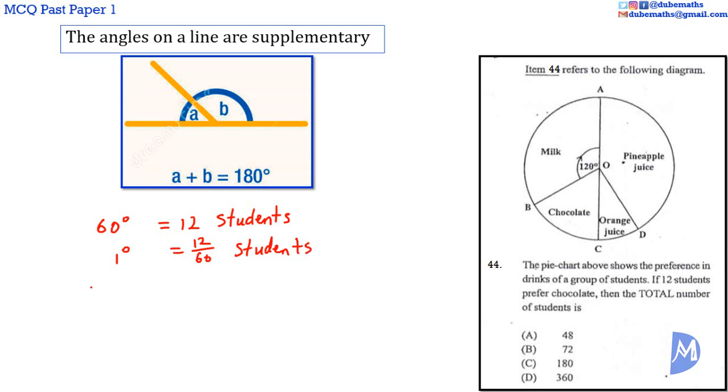And 360 degrees would represent 12 over 60 multiplied by 360 students. Canceling, 60 into 360 is 6. 12 multiplied by 6 is equal to 72. 72 students. The answer is B.